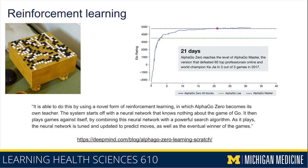At the start of the learning process, the algorithm didn't know anything about the game of Go. And as it played, it was able to get better and better and eventually even learn to predict who's going to be the winner of games.